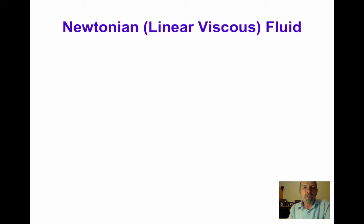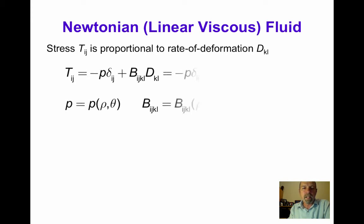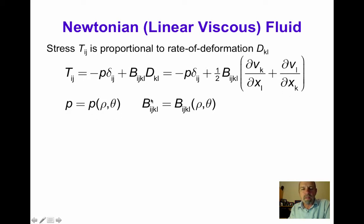For a Newtonian linear viscous fluid, the stress T_ij is proportional to the rate of deformation tensor D_kl. We can write T_ij equals minus p δ_ij plus b_ijkl times D_kl. Substituting for the rate of deformation tensor in terms of velocity gradients, we have minus p δ_ij plus one half b_ijkl times (∂v_k/∂x_l + ∂v_l/∂x_k), where p is a function of density and temperature, and the components of the fourth-order viscosity tensor b_ijkl are also functions of density and temperature.